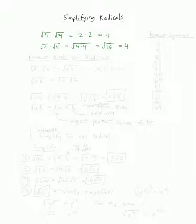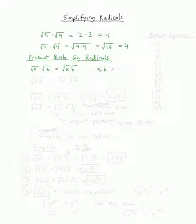This is called the product rule for radicals. It says the square root of a times the square root of b is equal to the square root of a times b — assuming both numbers are positive. You're not going to see an example where they're not until later on in math.